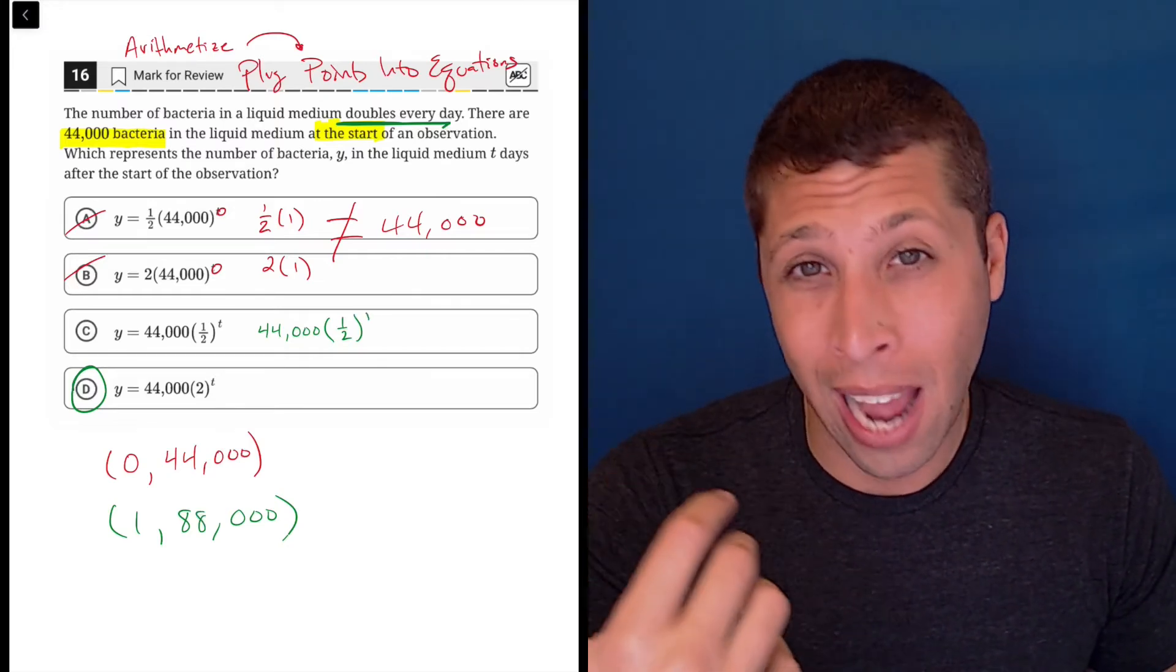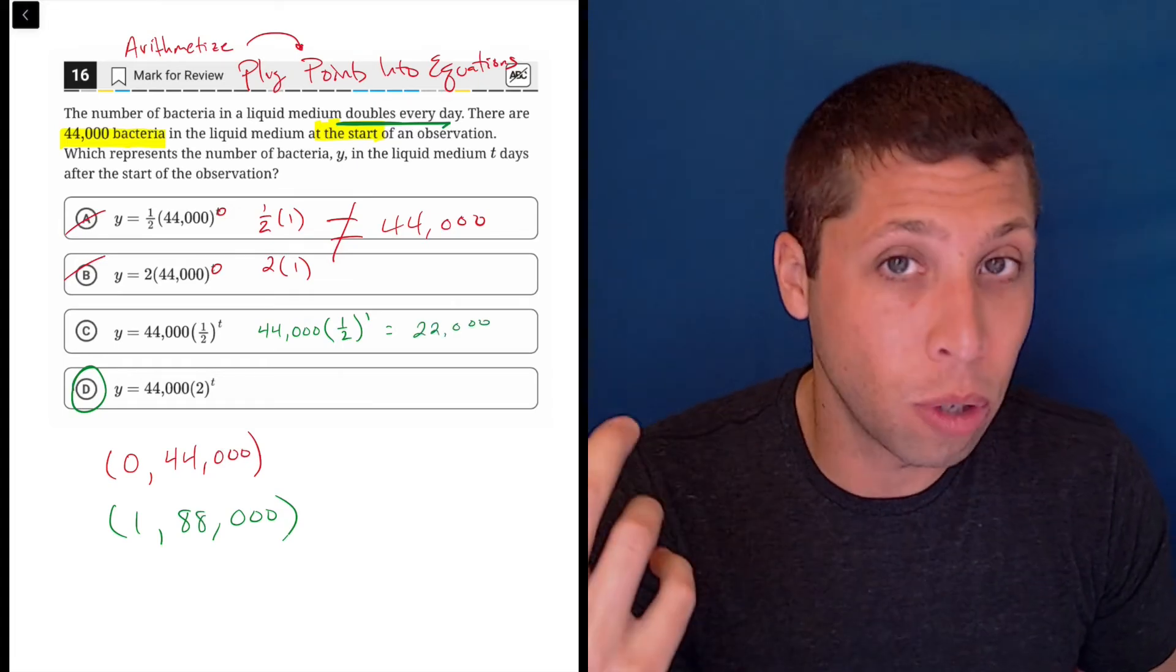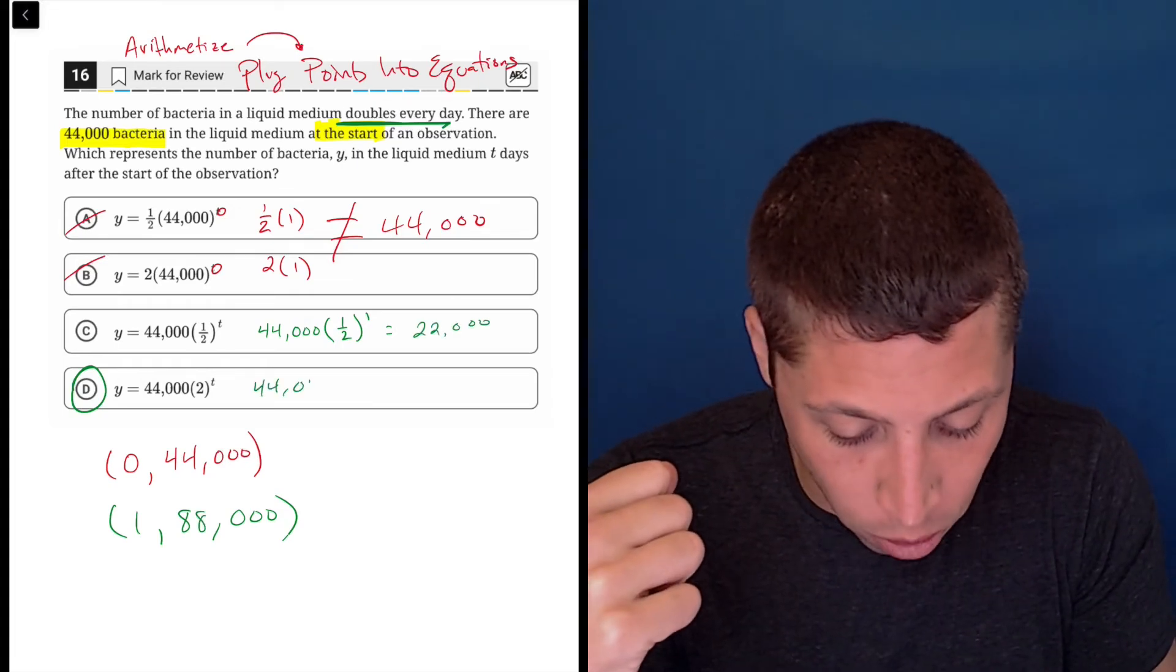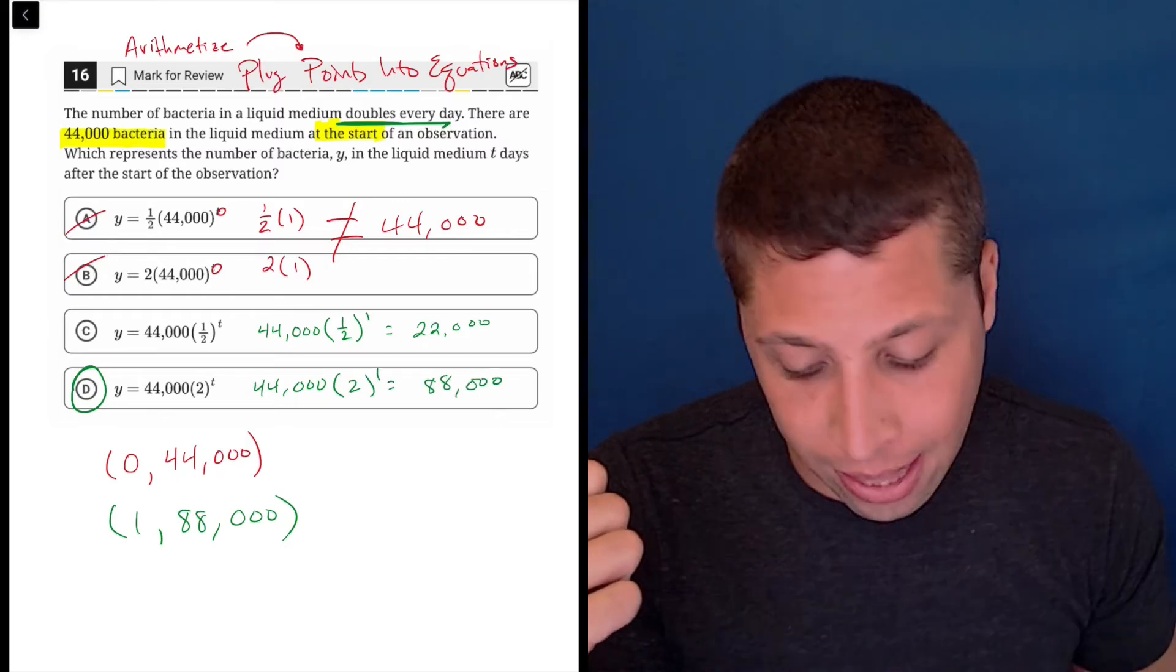Well, one half to the first is just one half. So this would actually get me a value of 22,000. So that's no good. Whereas here we'd have 44,000 times two, which again is just what we did. So 88,000.